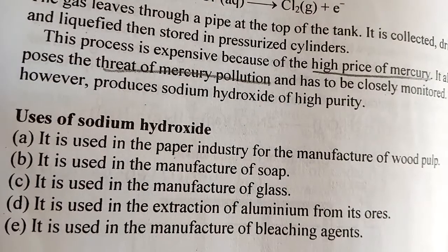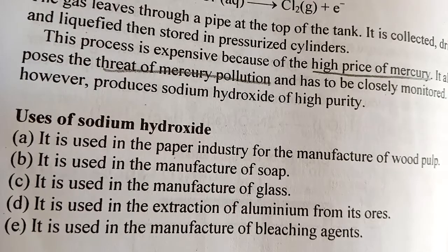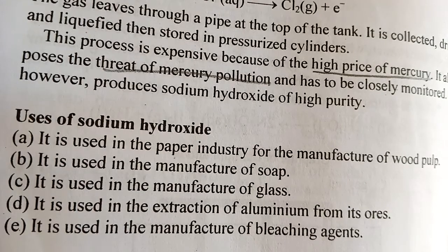The uses of sodium hydroxide include: manufacture of paper and wood pulp in the paper industry, manufacture of soap, manufacture of glass, extraction of aluminium through chemical leaching during concentration/purification, and manufacture of bleaching agents. That marks the end of lesson 13. Lesson 14 will cover quantitative treatment of electrolysis. Please subscribe to the YouTube channel to access all Form 4 chemistry videos.